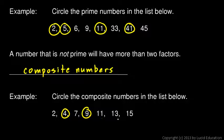11 is prime, 13 is prime, and in this case we're circling the composite numbers. But 15 is not only 1 times 15, but also 3 times 5, so 15 is composite.